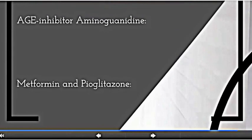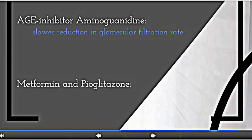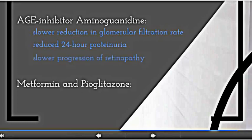For example, administration of AGE inhibitor aminoguanidine demonstrated a slower reduction in glomerular filtration rate, reduced 24-hour proteinuria, and slower progression of retinopathy.